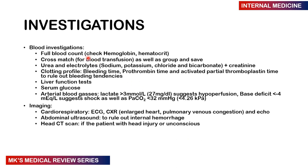Investigations include a full blood count to check hemoglobin and hematocrit; cross-match for blood transfusion and group and save; urea and electrolytes — checking sodium, potassium, chloride, bicarbonate, and creatinine; and a clotting profile including bleeding time, prothrombin time, and activated partial thromboplastin time, to rule out bleeding tendencies. Liver function tests and serum glucose are also important. Arterial blood gases suggesting shock include a lactate greater than 3 mmol/L (about 27 mg/dL), indicating hypoperfusion.